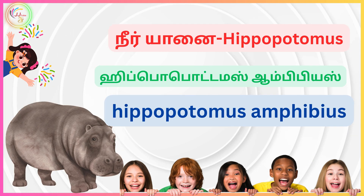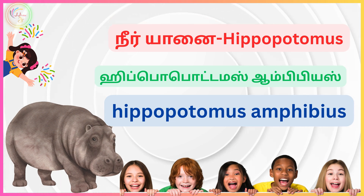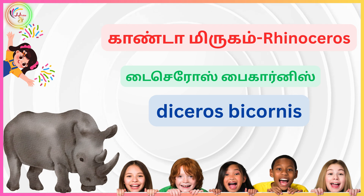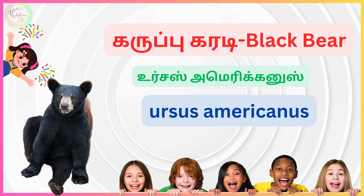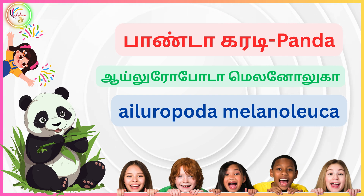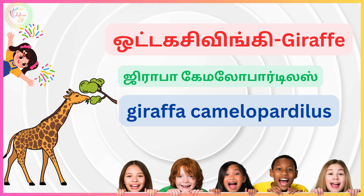Animal Name Aprica Yaane African Elephant, Scientific Name Loxodonta Africana. Animal Name Neer Yaane Hippopotamus, Scientific Name Hippopotamus Amphibius. Animal Name Gonda Rhinoceros, Scientific Name Diceros Bicornis. Animal Name Karupu Karadis Black Bear, Scientific Name Ursus Americanus. Animal Name Panda Karadis Panda, Scientific Name Ailuropoda Melanoleuca. Animal Name Uttagasimingi Giraffe, Scientific Name Giraffa Camelopardalis. Thank you for watching.